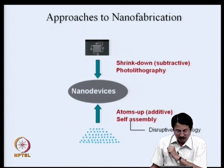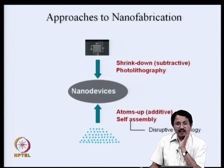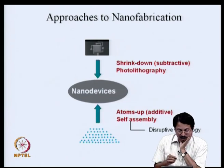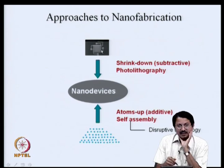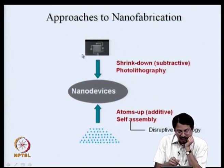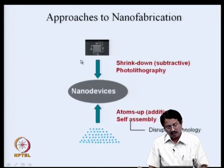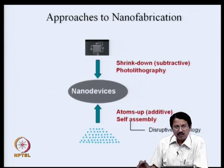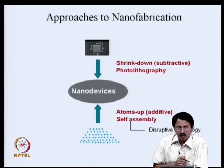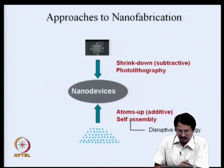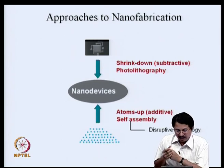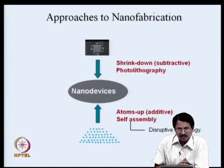There are two ways to approach nano dimensions. One is the top-down or shrink-down approach, sometimes called the subtractive approach — you start from large dimensions and etch away materials you do not want, bringing it down to the nanoscale. The key enabler here is photolithography. The other approach, which chemists have been working on, is to bring atoms together to assemble a new product — building from the atomic scale up to nano dimensions.